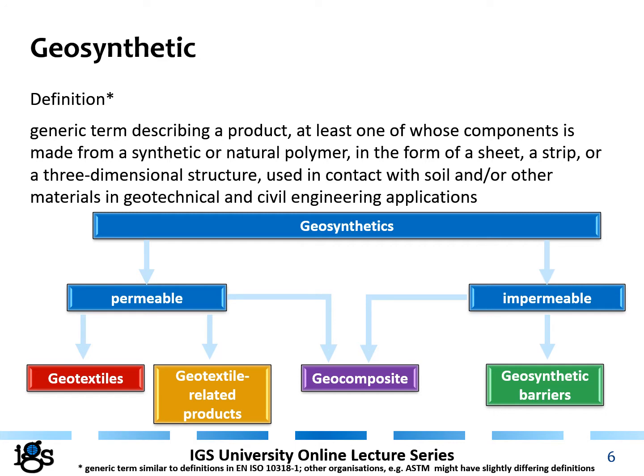On the permeable side, we have geotextiles and geotextile-related products, whereas the impermeable products are geosynthetic barriers. In between, we have geocomposites, which can fulfill both functions — they can be permeable, impermeable, or a combination — but are always a composite of at least two different geosynthetic types.